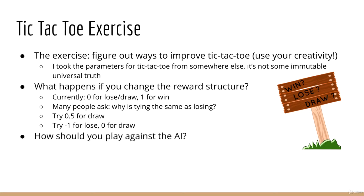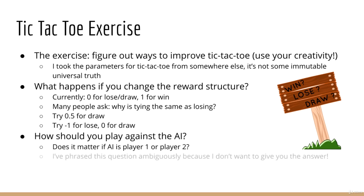The second question is: how should you play against the AI? A lot of people try to make the AI the second player and notice that it doesn't go so well. Why is that? Note that I've phrased this question somewhat ambiguously in order to not give you the answer.